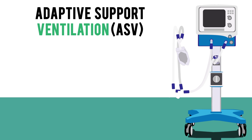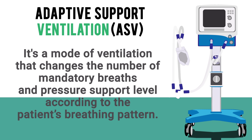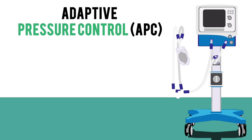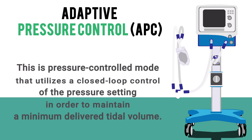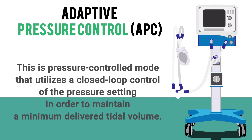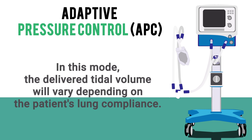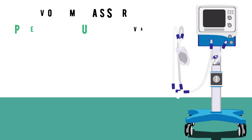Next up we have ASV, or adaptive support ventilation. This is a mode that changes the number of mandatory breaths and pressure support level according to the patient's breathing pattern. Next we have APC, or adaptive pressure control. This is a pressure-controlled mode that utilizes closed-loop control of the pressure setting to maintain a minimum delivered tidal volume. The delivered tidal volume will vary depending on the patient's lung compliance.